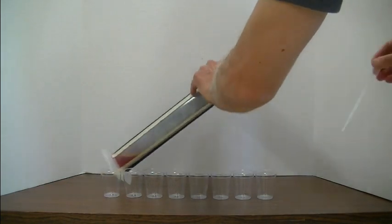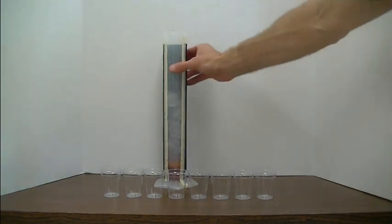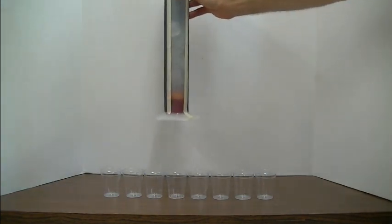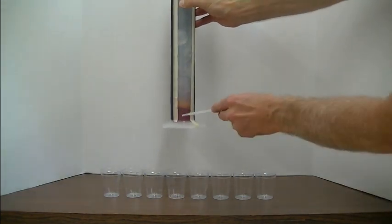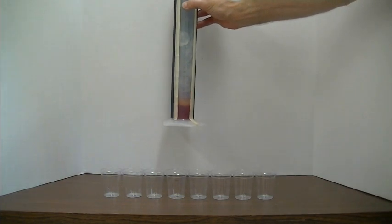I'm going to go ahead and stand this upright. And you can see that we've got two layers developing. We've got the red grenadine syrup down below and sort of the yellow orange pineapple juice.